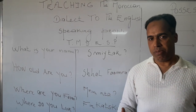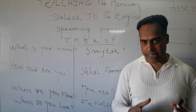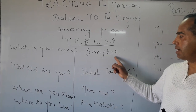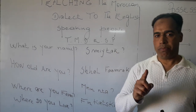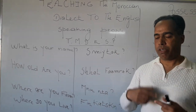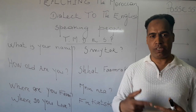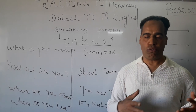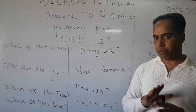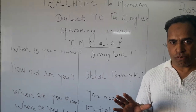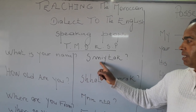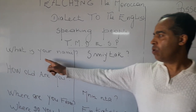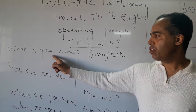The first question is 'What is your name?' in English. In the Moroccan dialect it is 'Smeetek.' You can repeat it three or four times and it becomes easier for you. Smeetek — it means 'What is your name?'